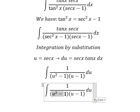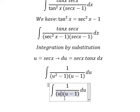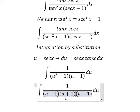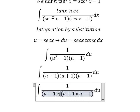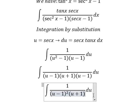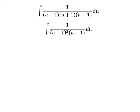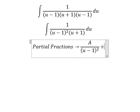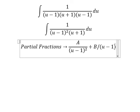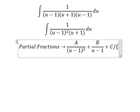Next, u squared minus 1 — using identities — factors as u minus 1 times u plus 1. So u minus 1 with u minus 1 gives u minus 1 to the power of 2. We can use partial fractions: capital A over u minus 1 squared, capital B over u minus 1, and capital C over u plus 1.